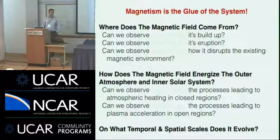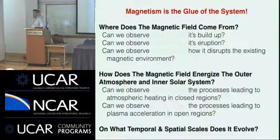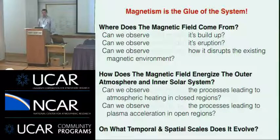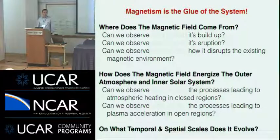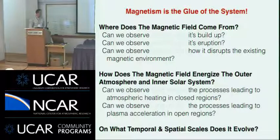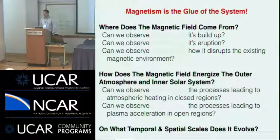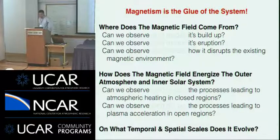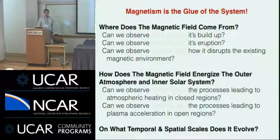If you have terrible boundary conditions — if your map of the inner solar system is not accurate — anything that you propagate into it is therefore not going to be accurate either. Understanding the processes that lead to atmospheric heating in closed regions also sets things like the composition. If you're worried about solar energetic particle events and a flare goes off, you need to know the composition of the material through which that will propagate, because that's the material that's going to come at you in the form of a shock. The counterpart in magnetically open regions is how is the plasma accelerated — that's really the solar wind.